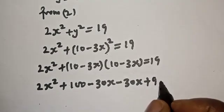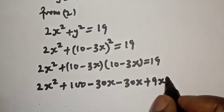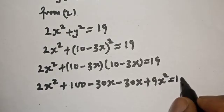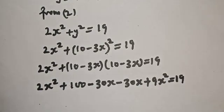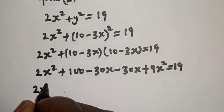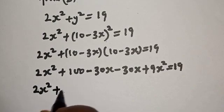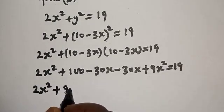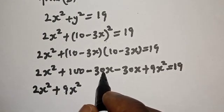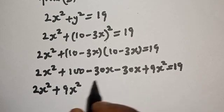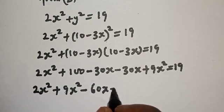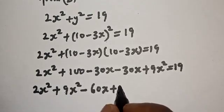Plus minus 3x times minus 3x, which is plus 9x squared, all equal to 19. Collecting like terms: 2x squared plus 9x squared gives 11x squared, and minus 30x minus 30x gives minus 60x, plus 100.